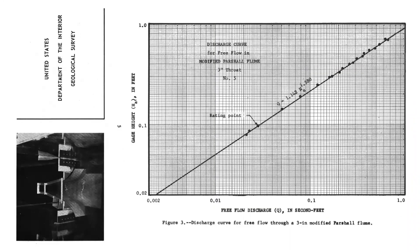If you design your Parshall flume with all the correct ratios, you can actually buy prefabricated ones online from a couple of manufacturers in the country. You get a nice stage-discharge relationship — the data points plotted with stage on the y-axis and flow rate on the x-axis on log-log paper — forming a tight line, and from there you can directly calculate your discharge using the equation.